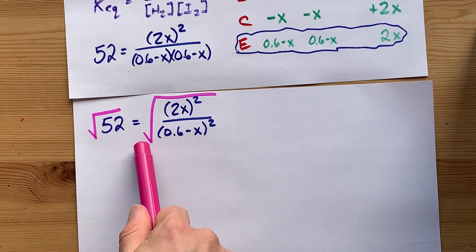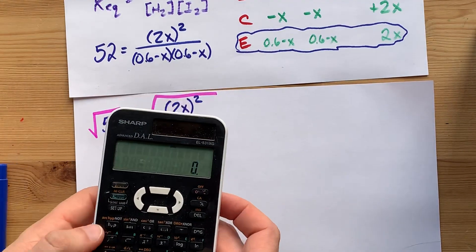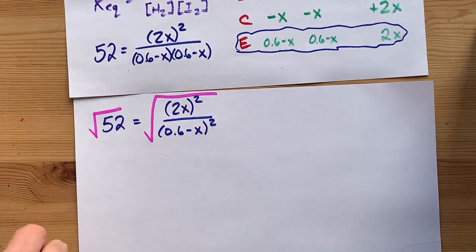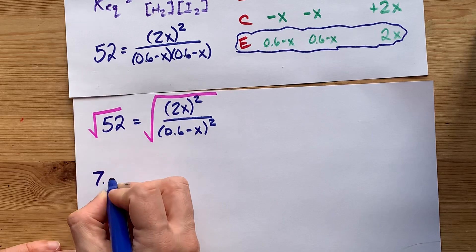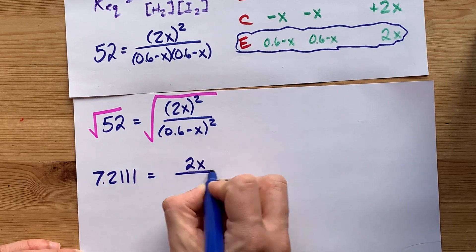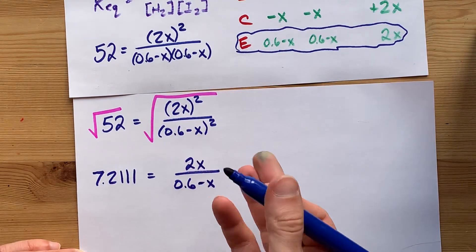Square rooting this side will cancel out the squares. The square root of 52 is some number 7.2111. 7.2111 equals 2X over 0.6 minus X. Notice we cancel out the squares.